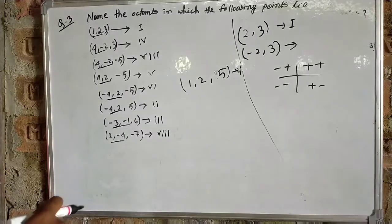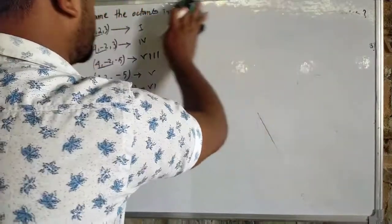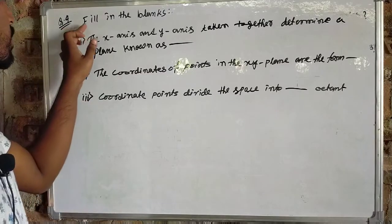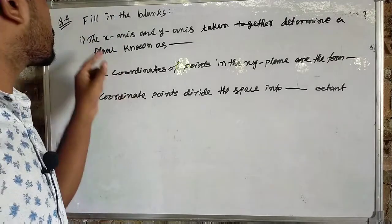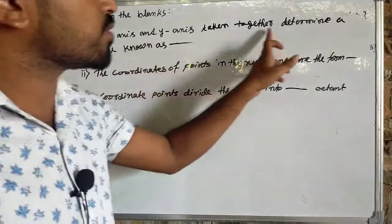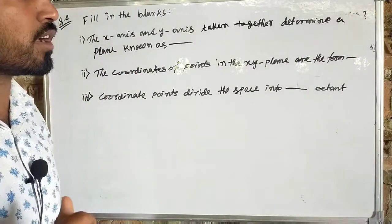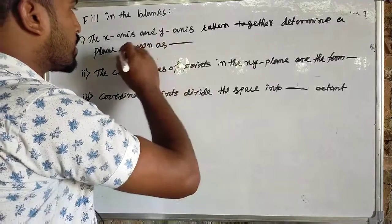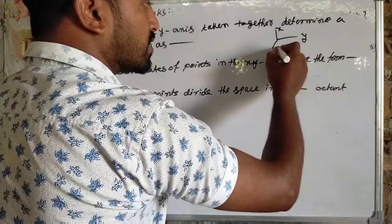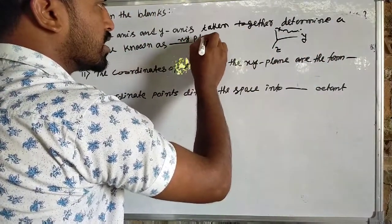Okay, let's see question number 4. Question number 4 asks to fill in the blanks. The X-axis and Y-axis together determine a plane — the XY plane. Here it is: the Y-axis and Z-axis determine a plane as well.